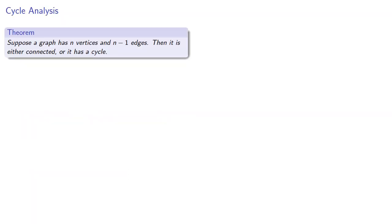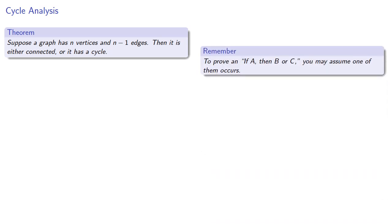Now to prove an if A, then B or C, you may assume that one of them occurs. Because remember B or C true requires at least one of them to be true.